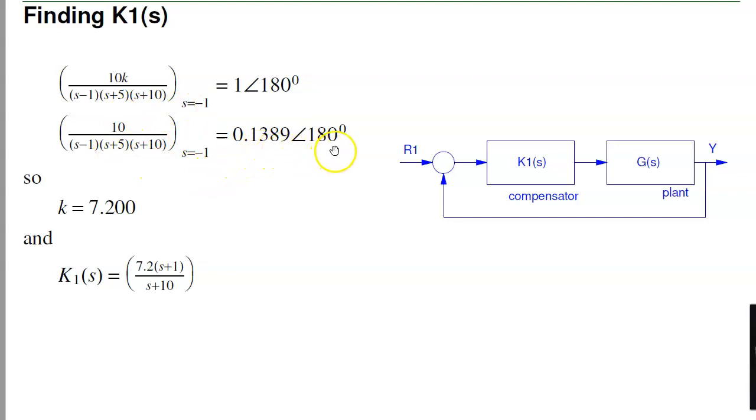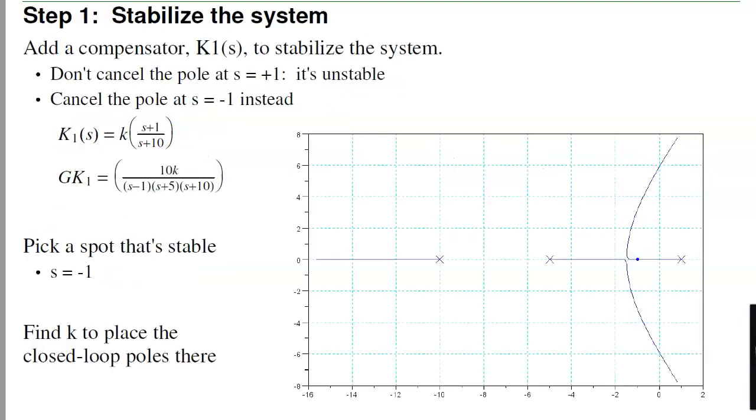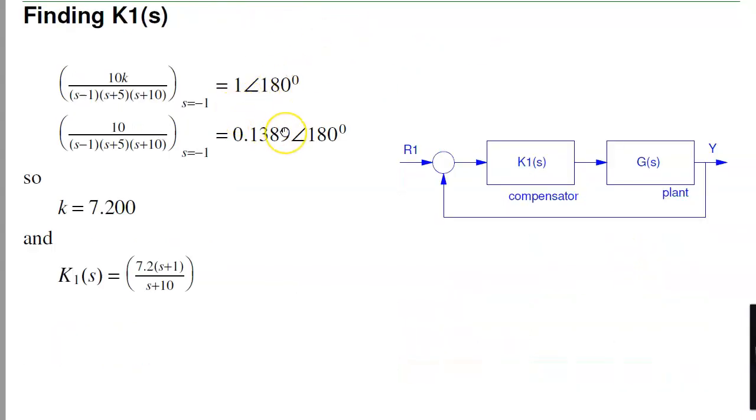If you analyze this, I get 0.1389 at 180 degrees. The 180 degrees tells you that minus 1's on the root locus. And yeah, I already knew that. The amplitude tells you K. So, K is whatever it takes to make the gain 1. 1 over 0.1389 is 7.2. That's K. And here is K of S.